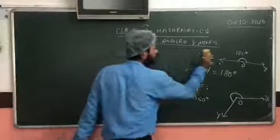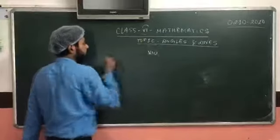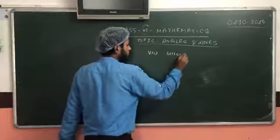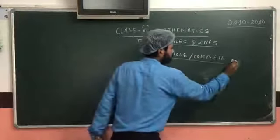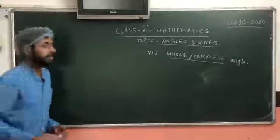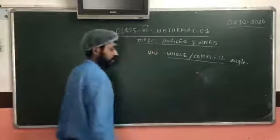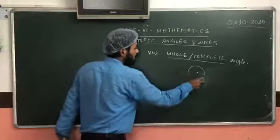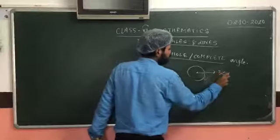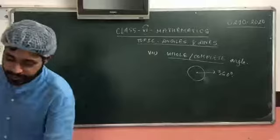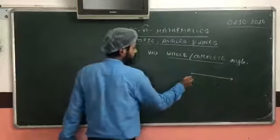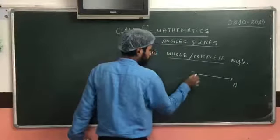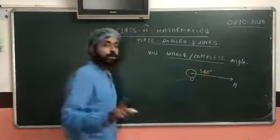The last angle we need to know is the complete angle or the whole angle. What is the whole or complete angle? We take a single point, and the whole angle around itself is 360 degrees. So any whole angle is 360 degrees. Say we have a ray starting at O going to point A — the angle all the way around this point is 360 degrees, called the whole or complete angle.